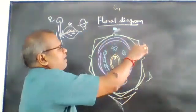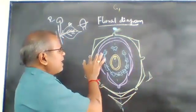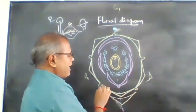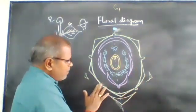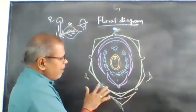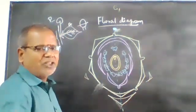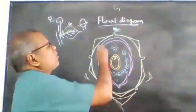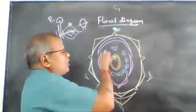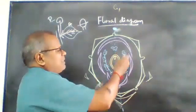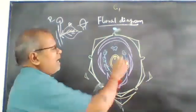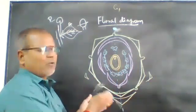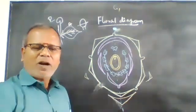If the sepals of the flower are united, they are connected by a connecting loop. If they are free, they are left as such. This is the floral diagram.